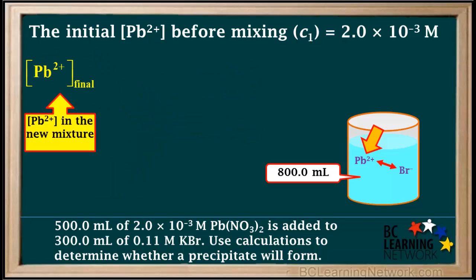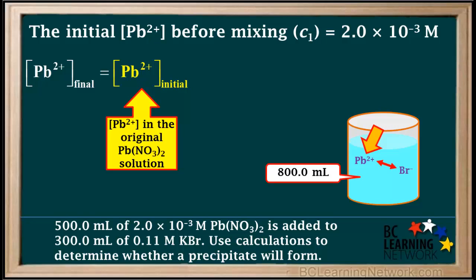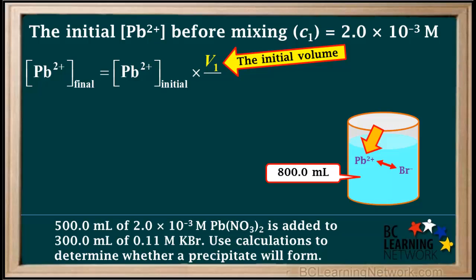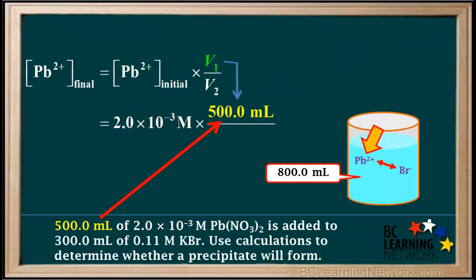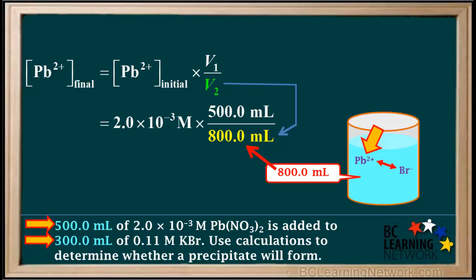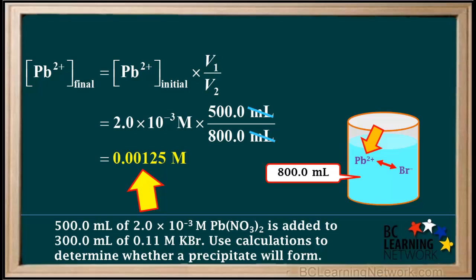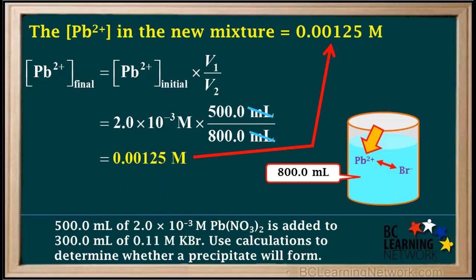The concentration of Pb²⁺ in the new mixture equals the concentration of Pb²⁺ in the original Pb(NO₃)₂ solution (the initial concentration) times V₁ over V₂ (the total volume). The initial concentration of Pb²⁺ was 2×10⁻³ molar, the initial volume was 500 milliliters, and the final total volume is 800 milliliters. The milliliters cancel out, so 2×10⁻³ × (500/800) = 0.00125 molar — that is the concentration of Pb²⁺ in the new mixture.